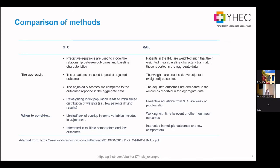The main difference between the two methods is that STC uses predictive equations to model the relationship between baseline characteristics and outcomes, whereas MAIC re-weights patients in the IPD so that the weighted baseline characteristics match those in the comparator trial. We then use those equations or weights to adjust the outcomes in our IPD, and compare them directly to the outcomes reported in the aggregate studies.